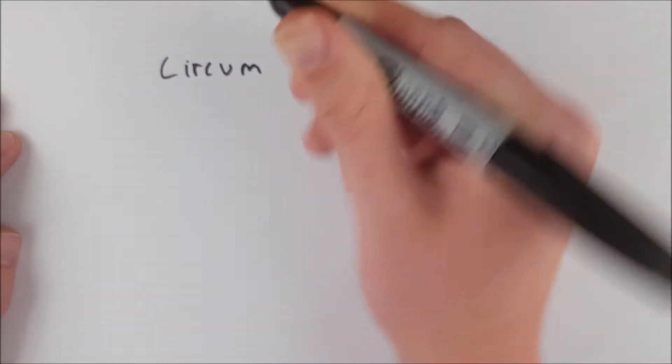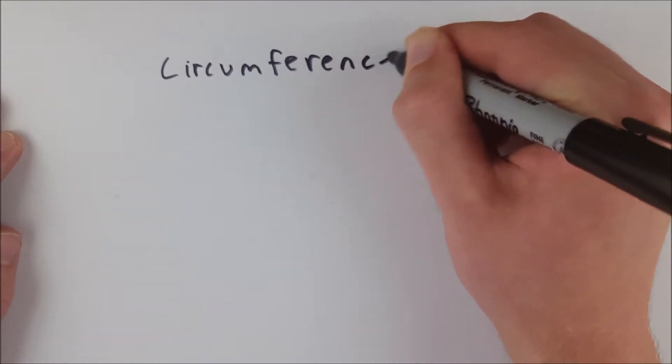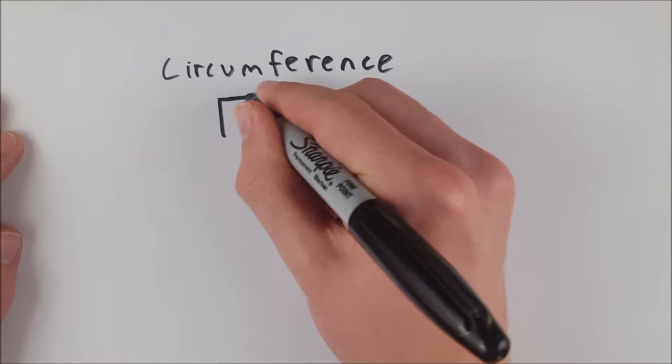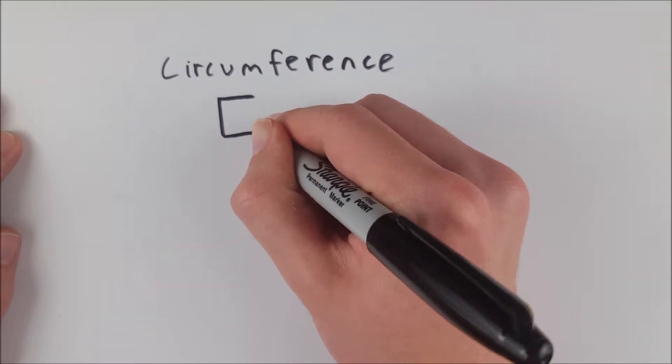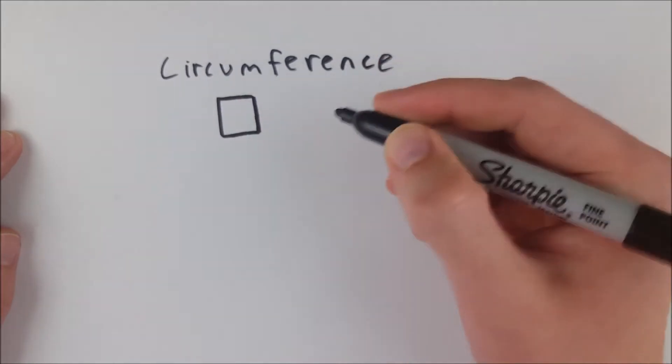What is the circumference of a circle? Well, you're probably familiar with squares and how they have perimeters, right? Which is the sum of the length of the sides, which is the distance around the square.